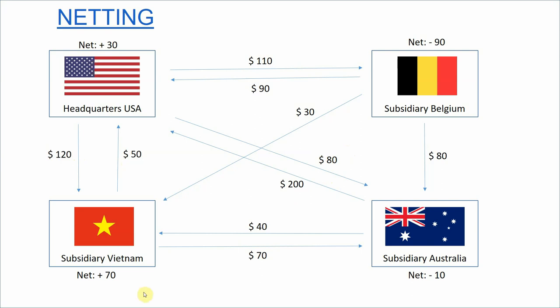In the end, the headquarters would receive 30 million dollars net. The Vietnam subsidiary would receive 70 million in total, the Australian subsidiary would have to pay 10 million in total, and the Belgium subsidiary in January would have to pay 90 million. So netting significantly reduces the number of transactions.